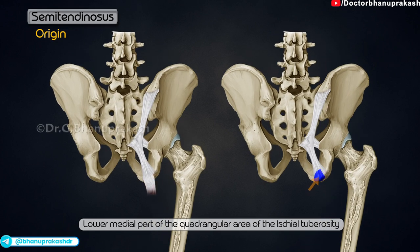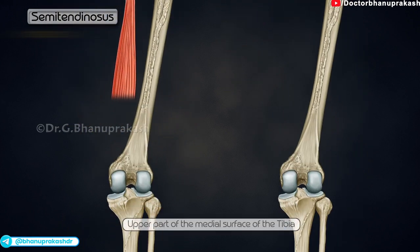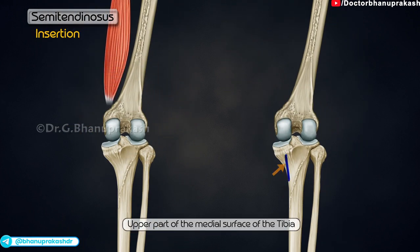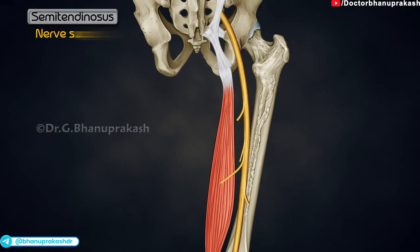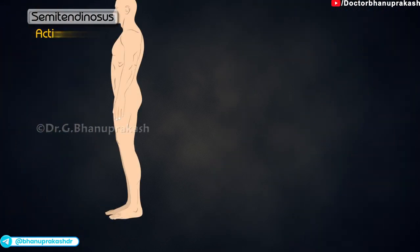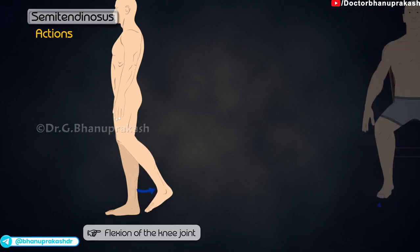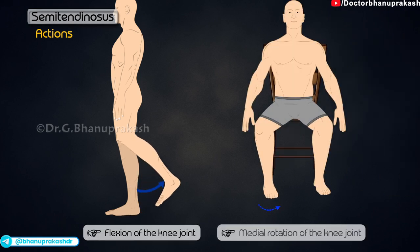Semitendinosus originates from the lower medial part of the quadrangular area of the ischial tuberosity, and inserts onto the upper part of the medial surface of the tibia. It is supplied by the tibial division of the sciatic nerve. Its actions are flexion and medial rotation of the knee, and extension of the hip.